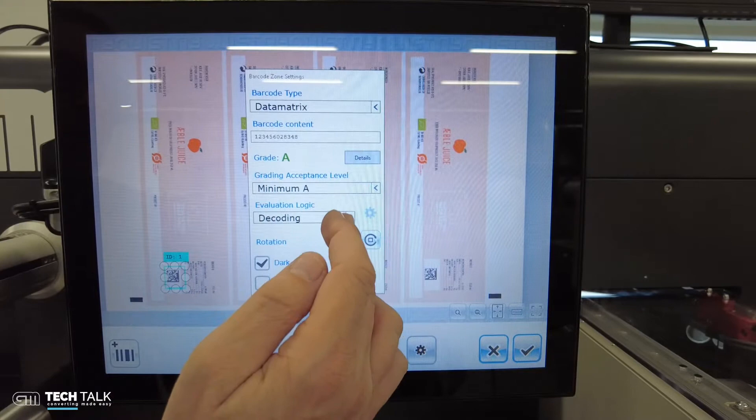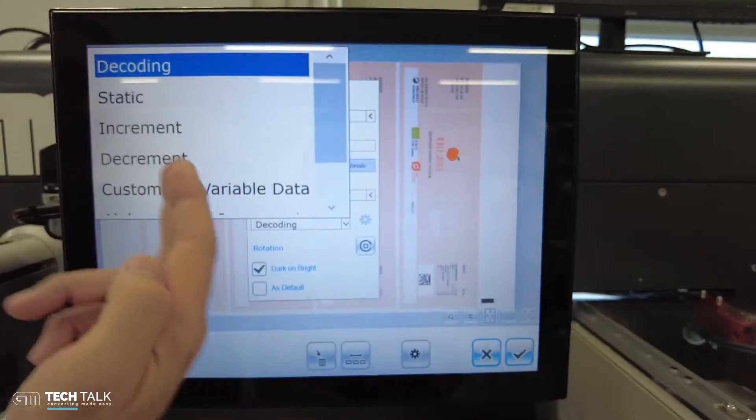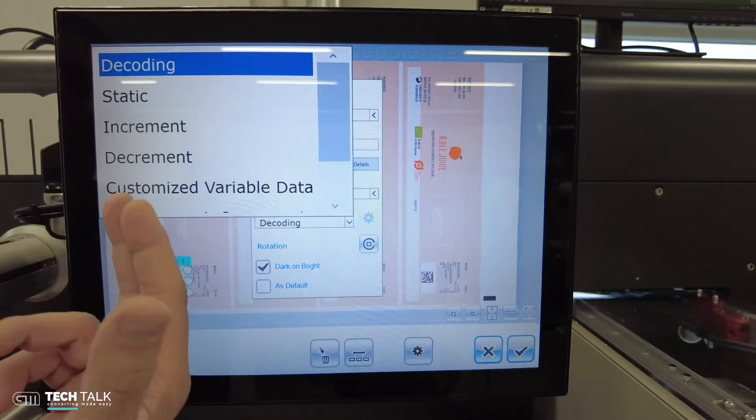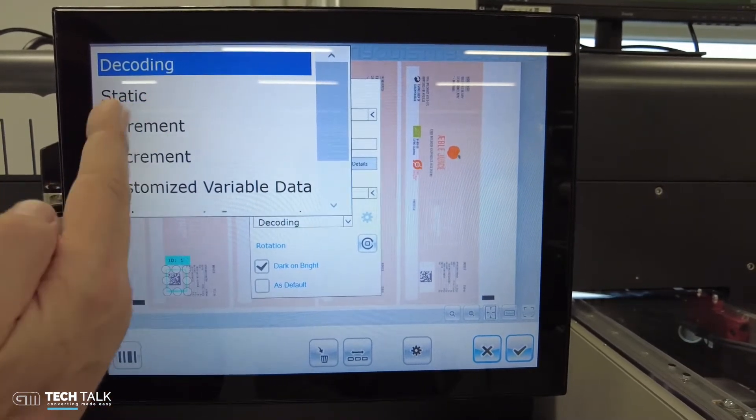Beside that we can also inform the system if we have a static code or if we have a variable code with, for example, an incremental sequence.